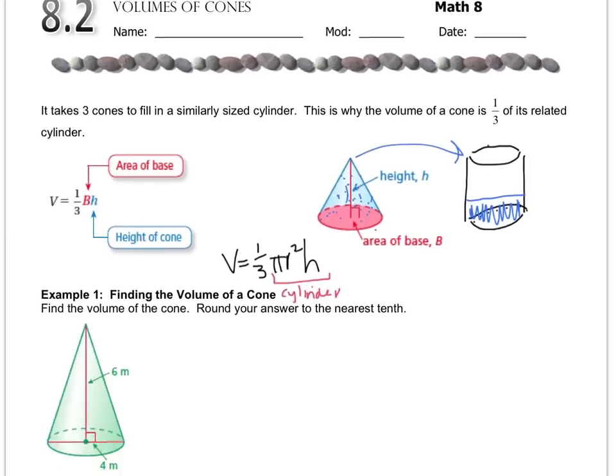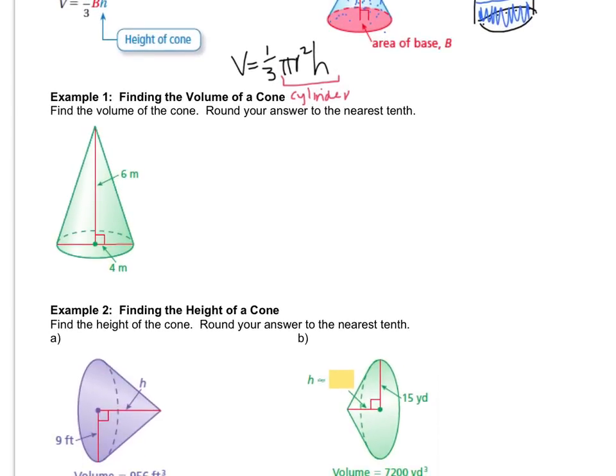So let's do some practice. We have to find the volume of the cone and we're going to round to the nearest tenth. The first thing that you always do when you have a formula question is you write the formula. V equals one-third π r squared h. And then the second thing that you do is you plug in what you know. So I don't know the V. Pi, I'll use 3.14.